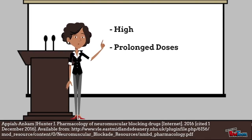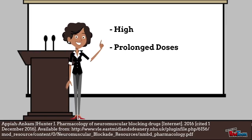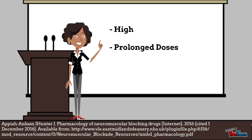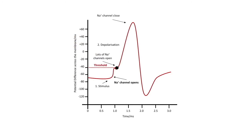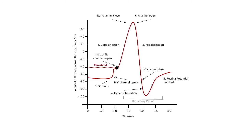When high or prolonged doses of succinylcholine accumulate in the neuromuscular junction, this produces similar effects to a competitive block — known as a phase 2 block. After initial depolarization, the membrane potential gradually returns to a resting state even though the neuromuscular junction is still exposed to the drug. Neurotransmission remains blocked throughout.